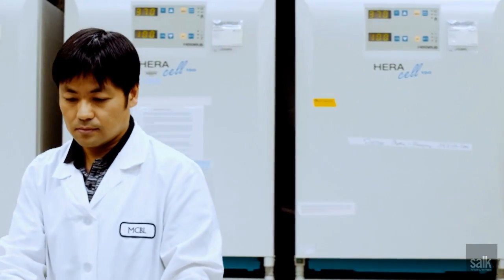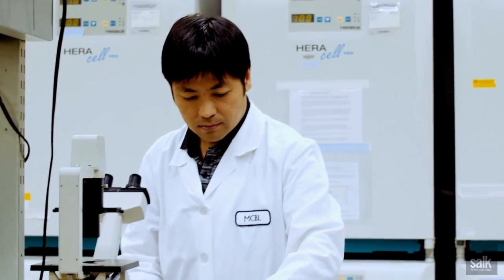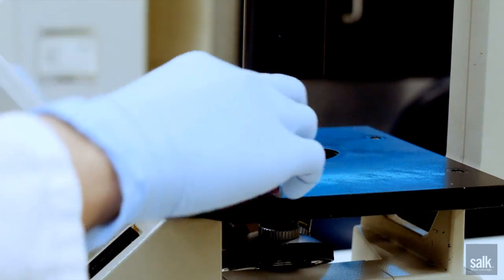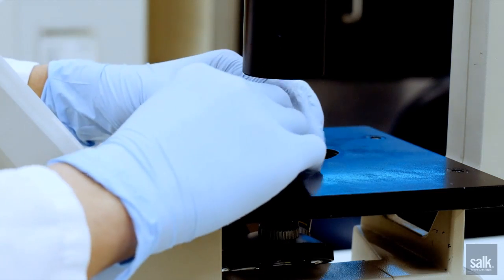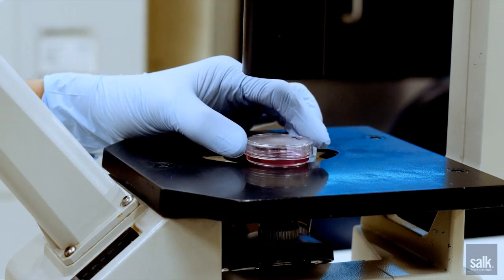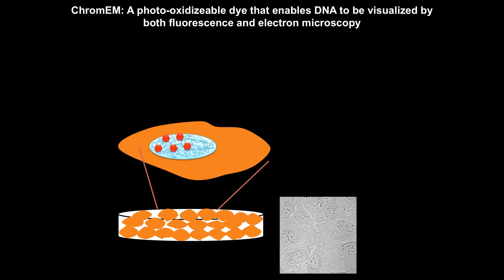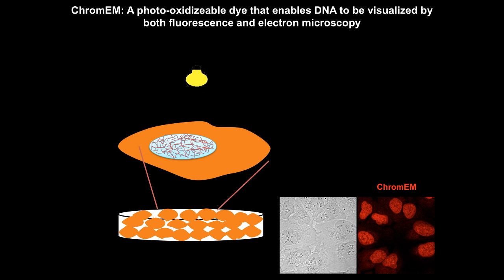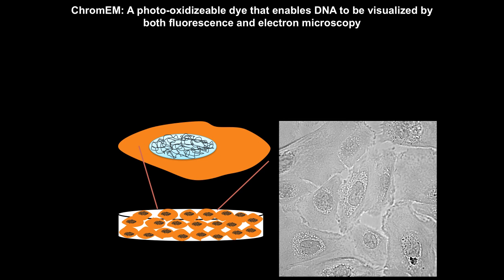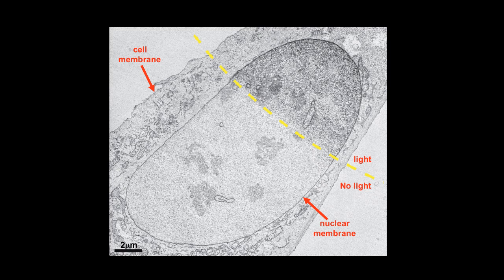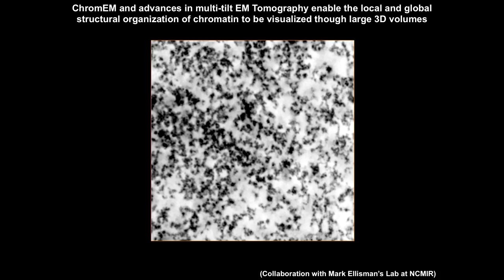What we did is we identified a fluorescent DNA binding dye that, when you shine light on it, has this really amazing property: it catalyzes a metal polymer — a cast — across the surface of DNA and chromatin in the nucleus, which enables it to be visualized in the electron microscope.